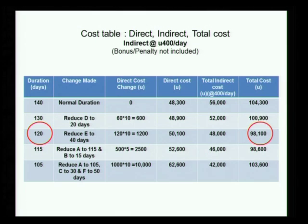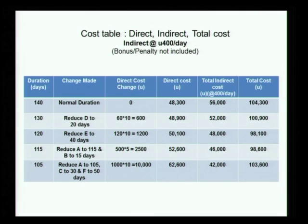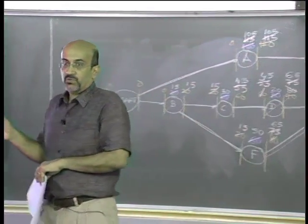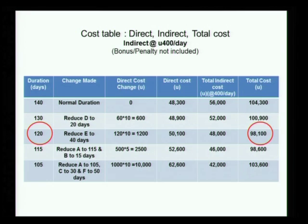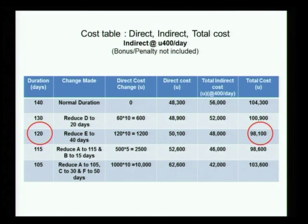Now what happens when we add bonus and penalty? Remember the bonus and penalty was 300 per day. Can you add the bonus and penalty to this and see how the results differ? We need to know the schedule first. Our normal duration is 140. If it is 140, there is no bonus and no penalty. If it is 130, that is 10 days of bonus — 10 times 300 equals 3000. If it goes to 120, it will be another 3000. What if I exceed 140 and go to 150? That is 10 days of penalty.